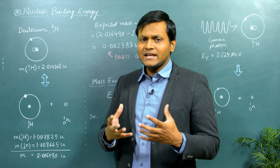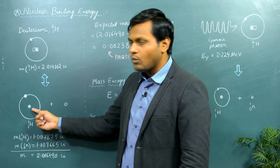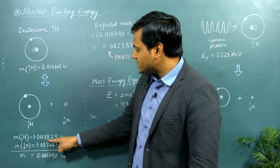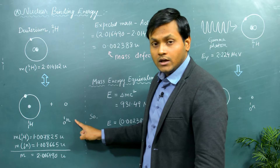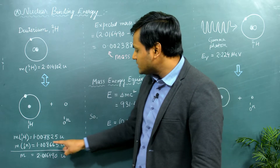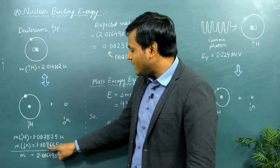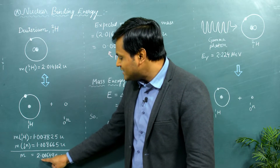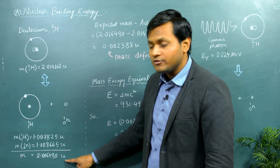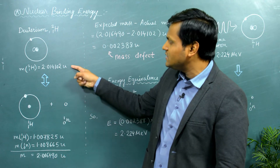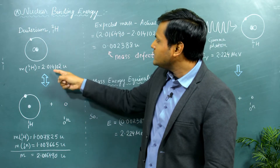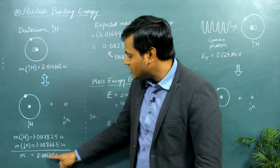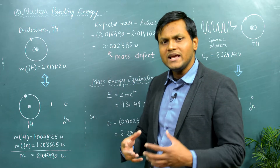But that's not exactly what happens. If you take the mass of a hydrogen atom — basically one proton and one electron — the mass comes out to be 1.007825 atomic units. The mass of a free neutron particle comes out to be 1.008665 atomic units. Adding both of these values, the total mass comes out to be 2.016490 atomic units, which is not the same as the deuterium mass of 2.014102. So what is happening?